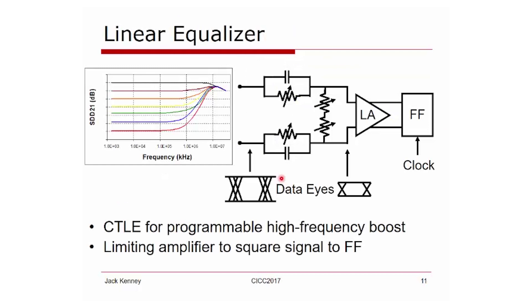On the receiver, we also have an equalizer. We have a continuous time linear equalizer. And now remember, with the insertion loss, everything is being shrunk to lower voltages.